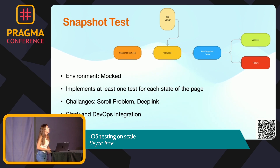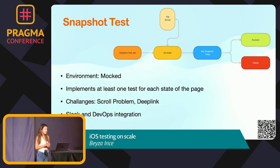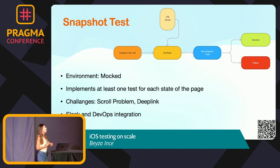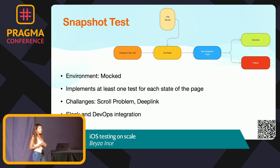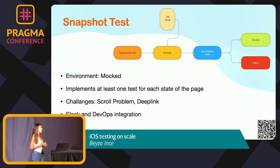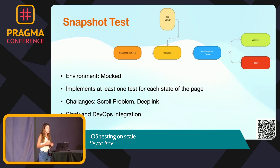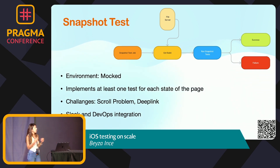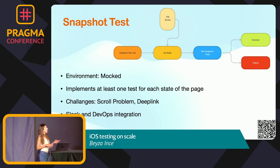Now let's discover another test process: snapshot test. This test is actually my baby because I integrated it three years ago in our team. Same as the smoke test, it uses mock data. We can't define this test as required because we still have some flaky problems with precision. We also had some problems with scrolling and deep links, but we can fix these with some features I'll explain in the next section. The beauty of this test is that we can see results easily in our Slack and DevOps integration.